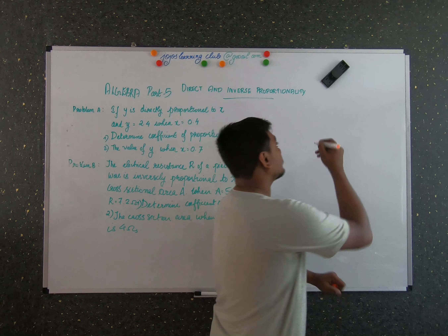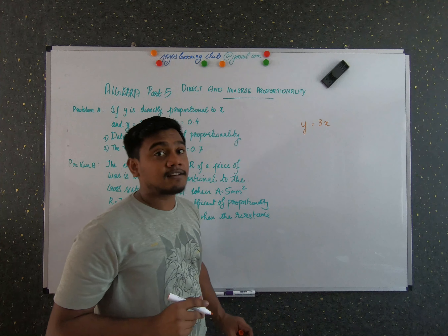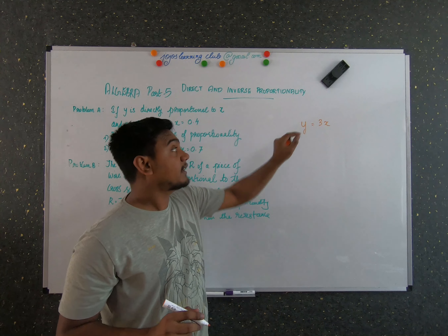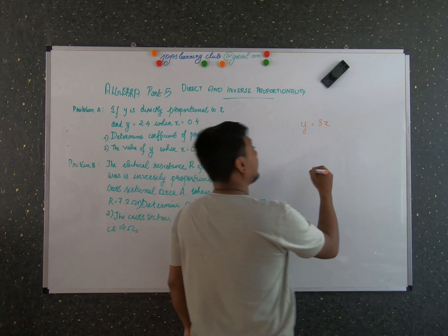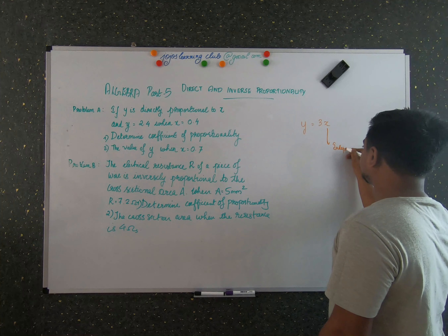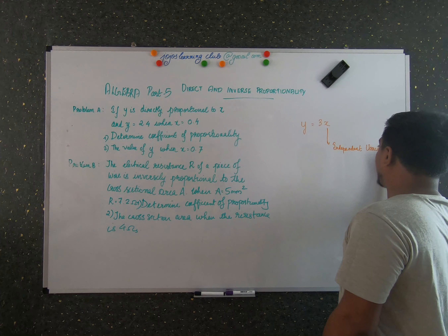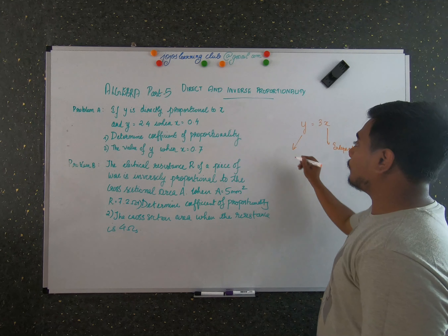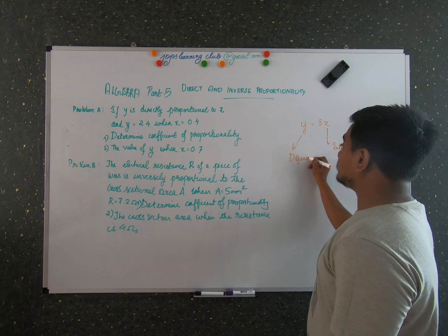Let's take an expression first. So y is equal to 3x. This is an expression, and you can see that whenever you give a value for x, there is a corresponding value for y. So you can say that x is here the independent variable, and y is dependent on x. So y is known as the dependent variable.